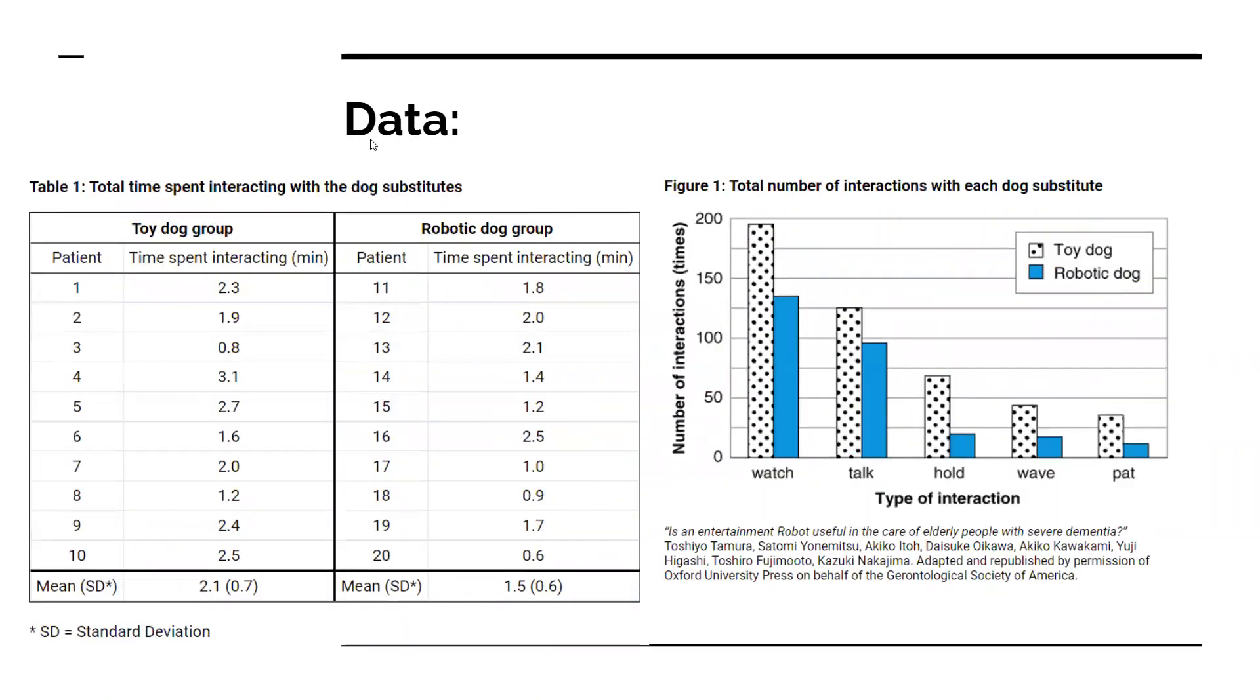Next, we've got our tables. When you get into the exam, spend plenty of time looking at the tables and digesting what's happening. For the first table, we've got 10 patients in total with the time spent interacting with the dog in minutes for both groups. You want to look at sample size, types of variables, mean, standard deviation, and how close these are together. In Figure 1, there's a bar graph comparing the toy dog with dots versus the robotic dog in blue, showing how they interacted with them.